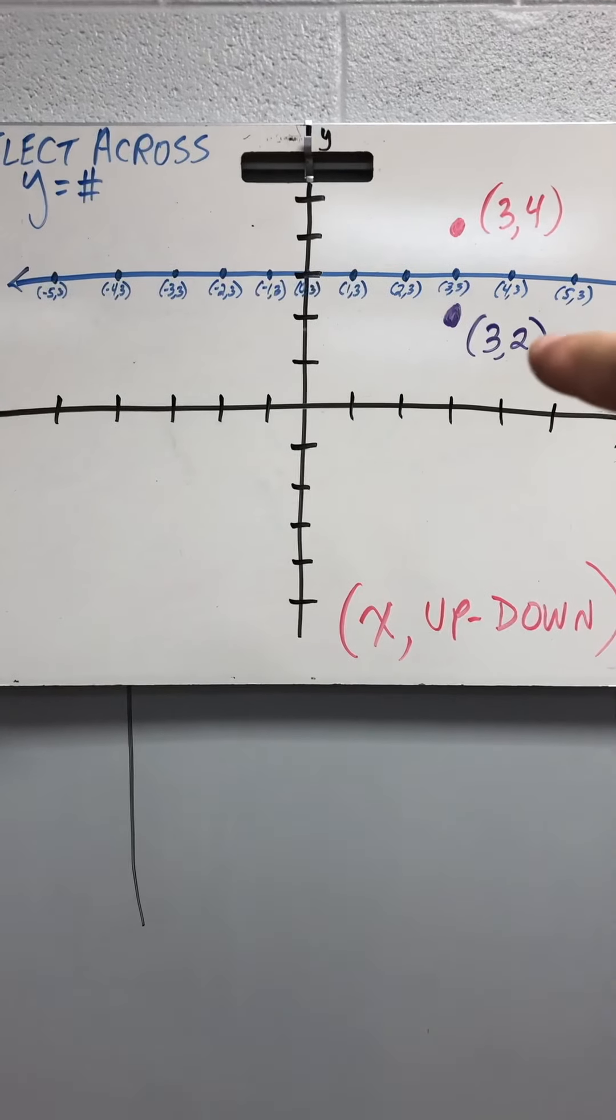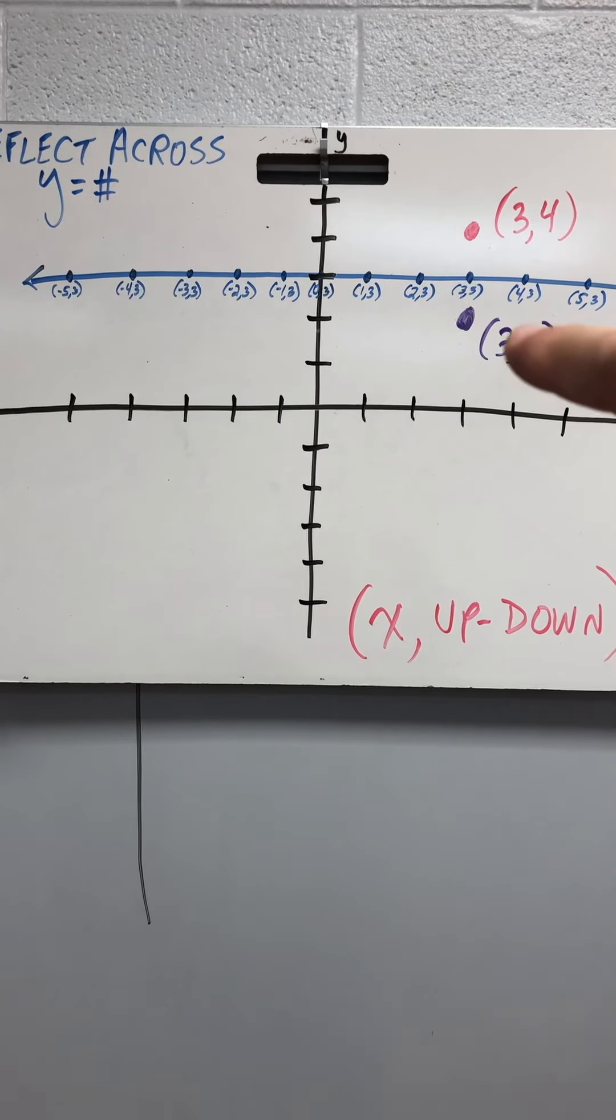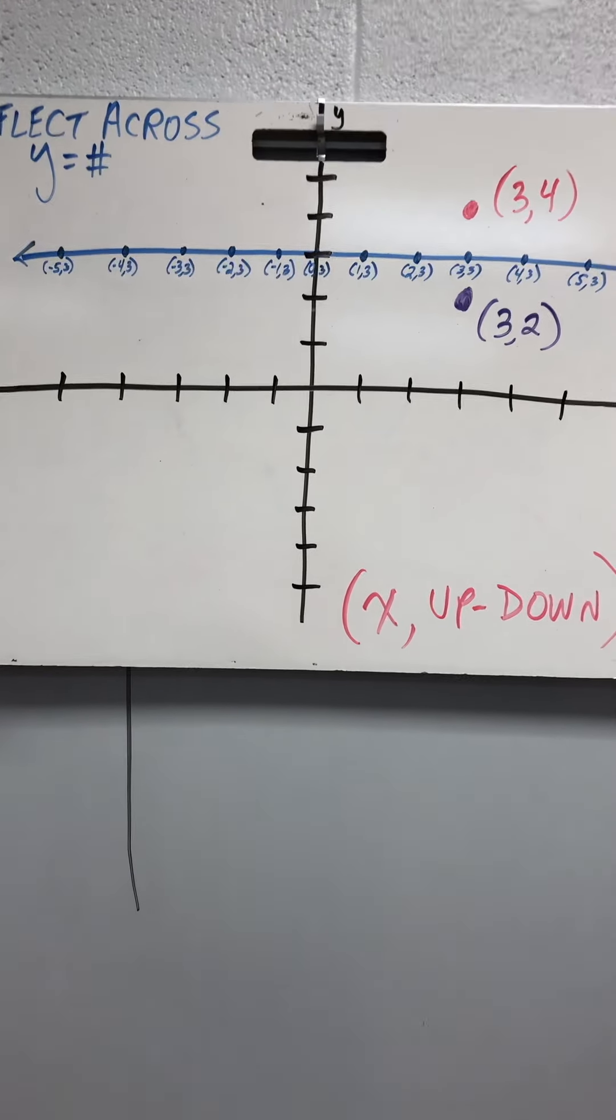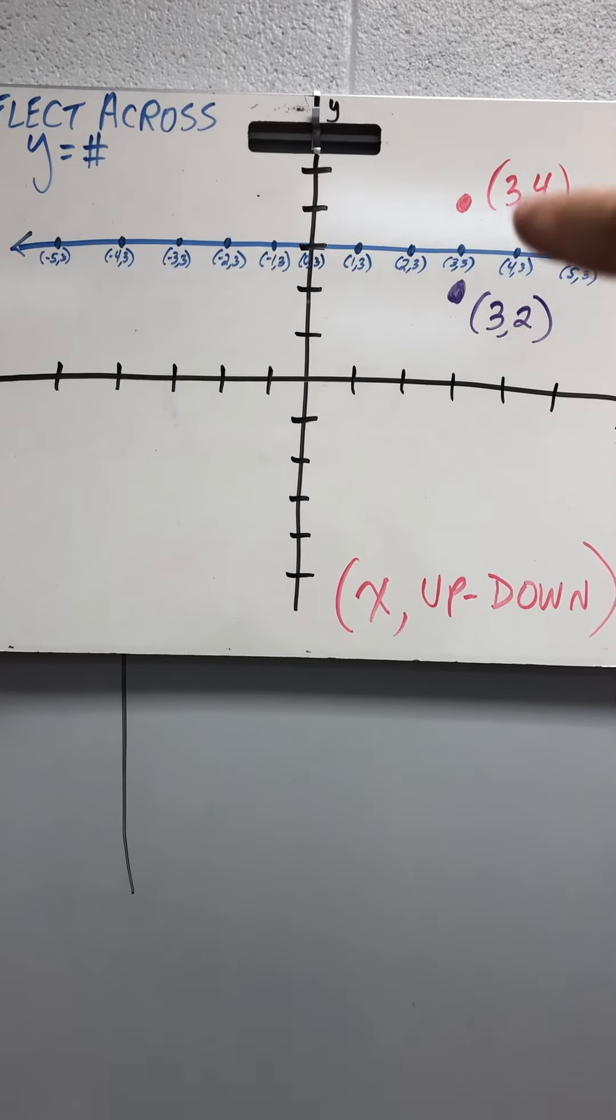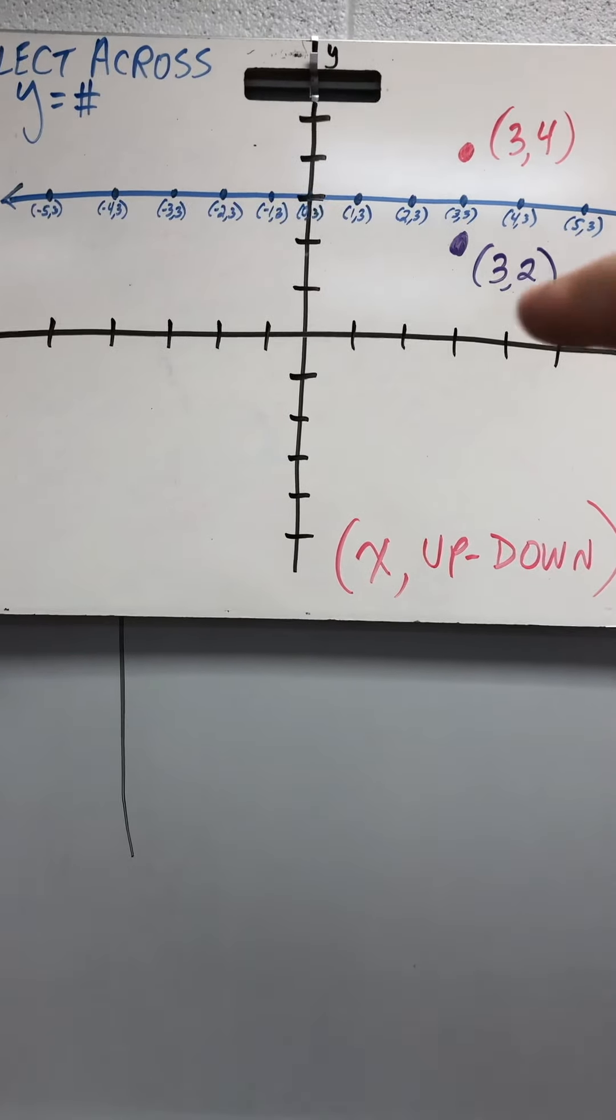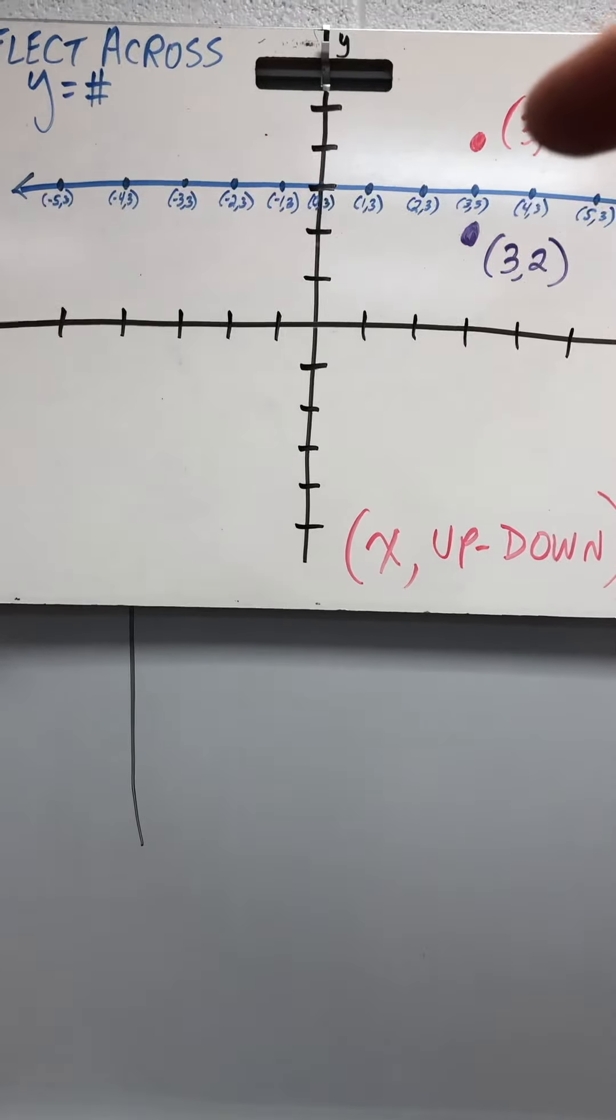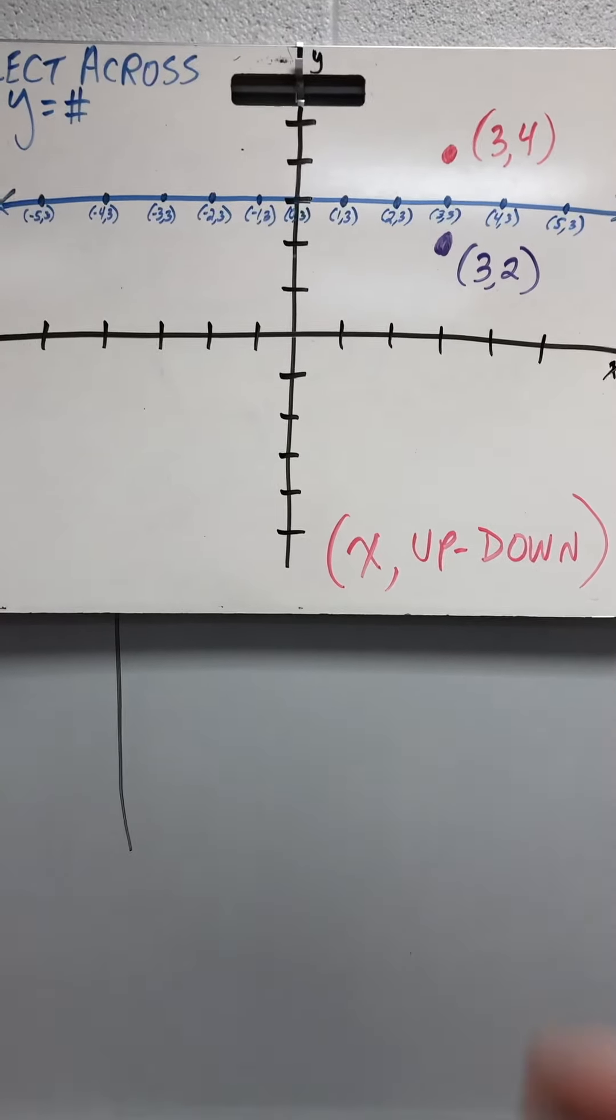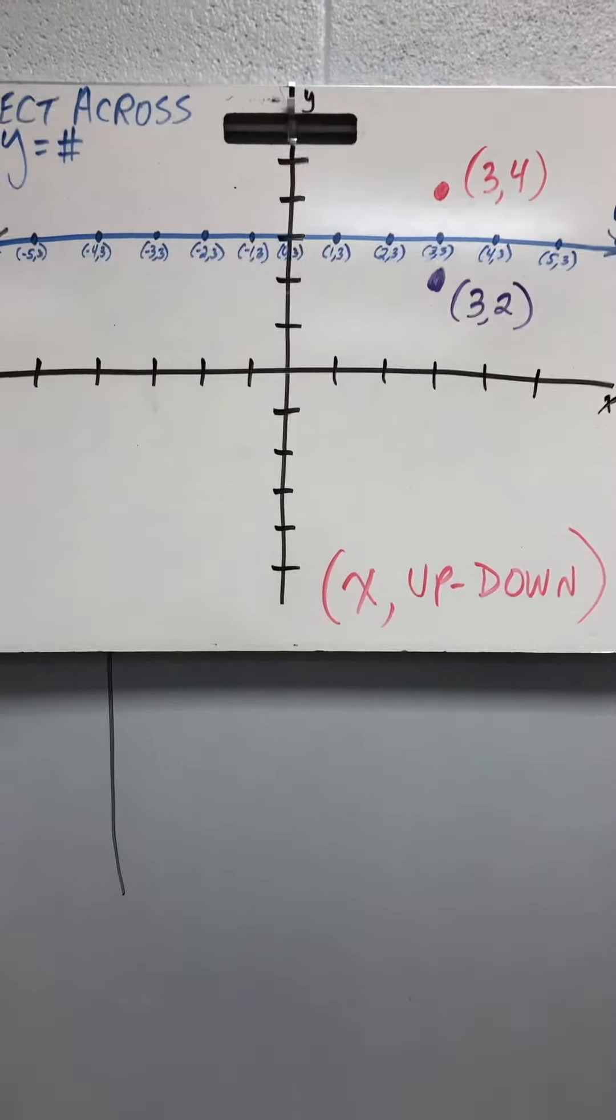So if the original point is 1 below the line, the reflection will be 1 above the line. Notice how the x value doesn't change, the y value changes. Notice if it's down 1, you go up 1. So I call this x up-down. Okay?